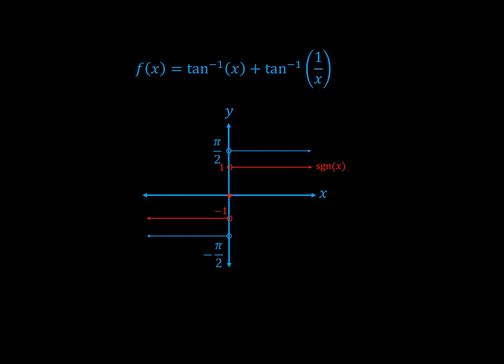Our function f is just a scaled form of this function, except at x equals 0. So our grand formula is this. The inverse tangent of x plus the inverse tangent of 1 on x. It's the sign of x times pi on 2.